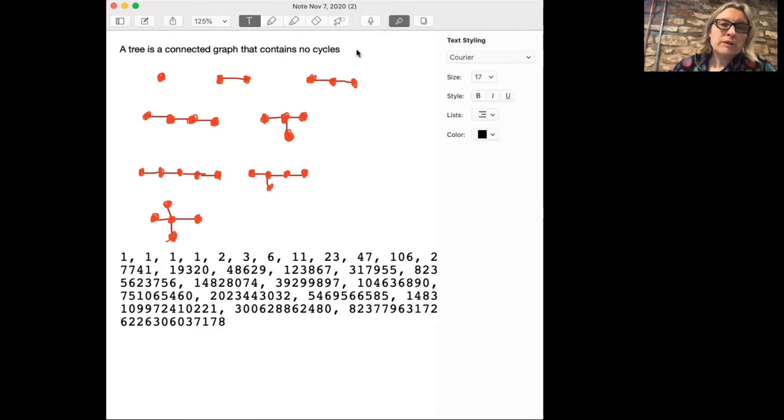Containing no cycles means there are no loops. There are different ways of expressing that condition. One is that there's exactly one way to get from one vertex to another if you don't backtrack. We'll see some other definitions later.